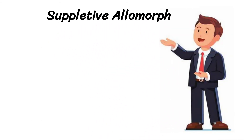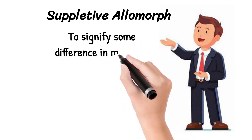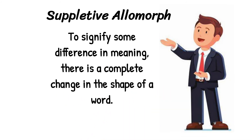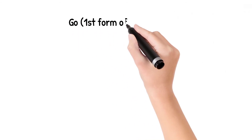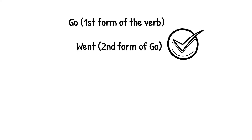Moving towards the suppletive allomorph: the process is called suppletion. Suppletive allomorphs are used to signify some difference in meaning — there is a complete change in the shape of a word. For example, 'go' is the first form of the verb. When we make the second form, we don't say 'goed', but we say 'went', because the process here is suppletion.